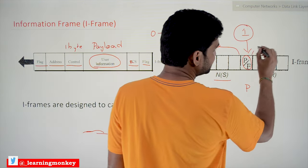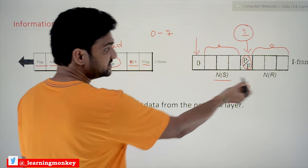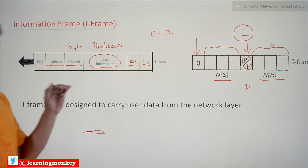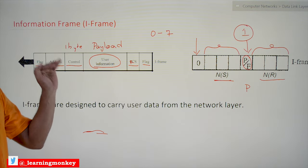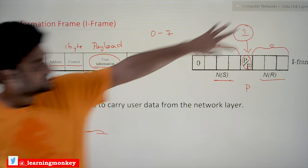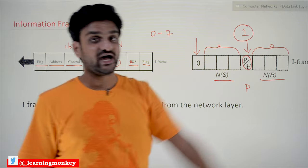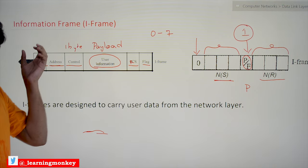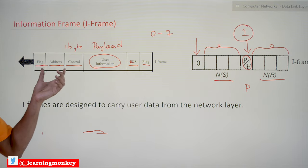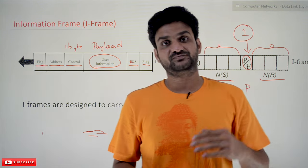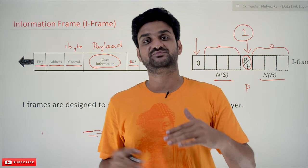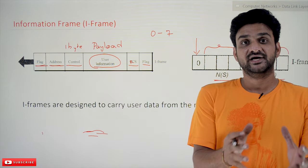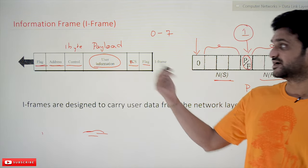The next three bits are acknowledgment bits — NR. Similarly to the sequence number, these three bits in the last part of the control field represent the acknowledgments being transmitted within this data frame. As for the address field: if it is a primary system, it sends the address of the receiver; if it is a secondary system, it sends the from-address — the address from where the acknowledgment is being transmitted. FCS is the checksum or error detection technique being used — the output of the error detection is placed here, followed by the flag bits.